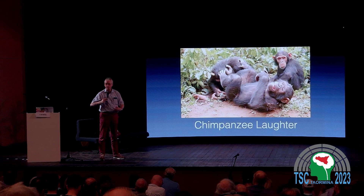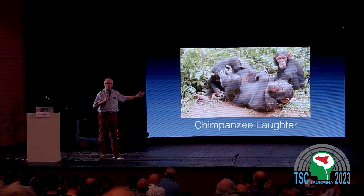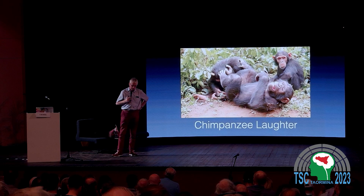Young chimpanzees have the same tickling spots as children — under the armpits, on the belly — and they have the same ambivalent reaction: they laugh when you tickle them, but then push your hands away, and then wait for you to come back. The reactions are very similar. All the expressions you see in humans you can see in chimpanzees, and I personally think all the emotions you see in humans you can see in chimpanzees.